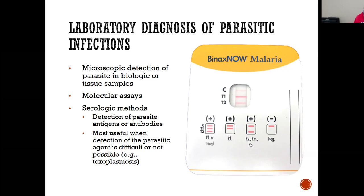Rapid antigen detection — lateral flow assays — we're real familiar with those. ELISA is on page 395, and page 396 covers the serological methods. There are limitations, and then it kind of backtracks into toxoplasmosis.